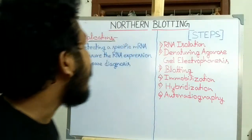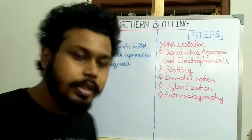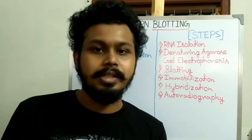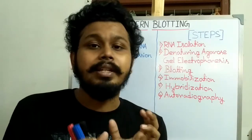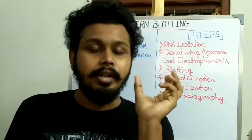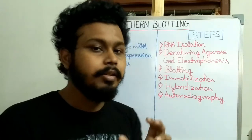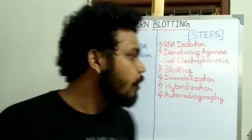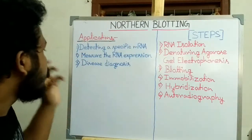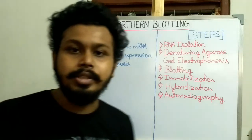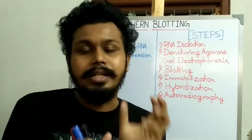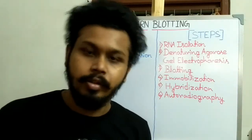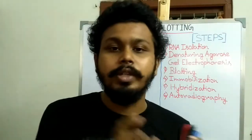We can then detect the specific RNA molecule by autoradiography. Northern blotting is also used to measure the RNA expression rate of a gene in a tissue or cell by measuring the quantity of RNA present. It is also used for disease diagnosis, allowing us to detect the gene expression rate during disease conditions.